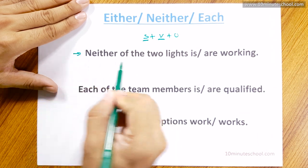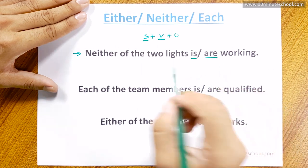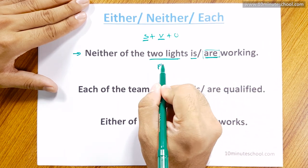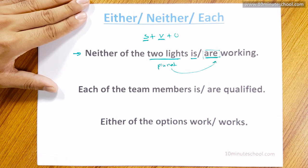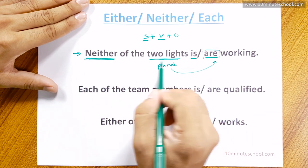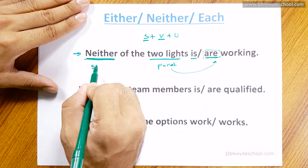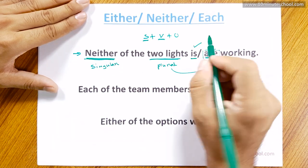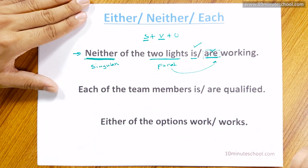The sentence is: 'Neither of the two lights is working.' This means one of the two lights is not working. Neither of the two lights is working, meaning the subject here is singular, so the verb 'is' is correct.